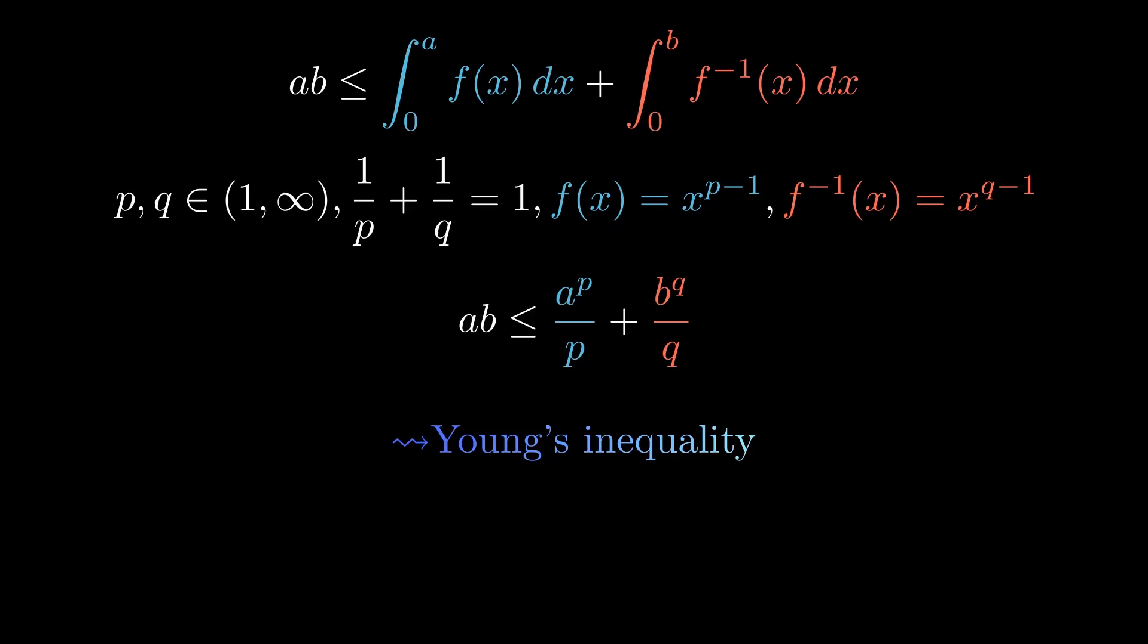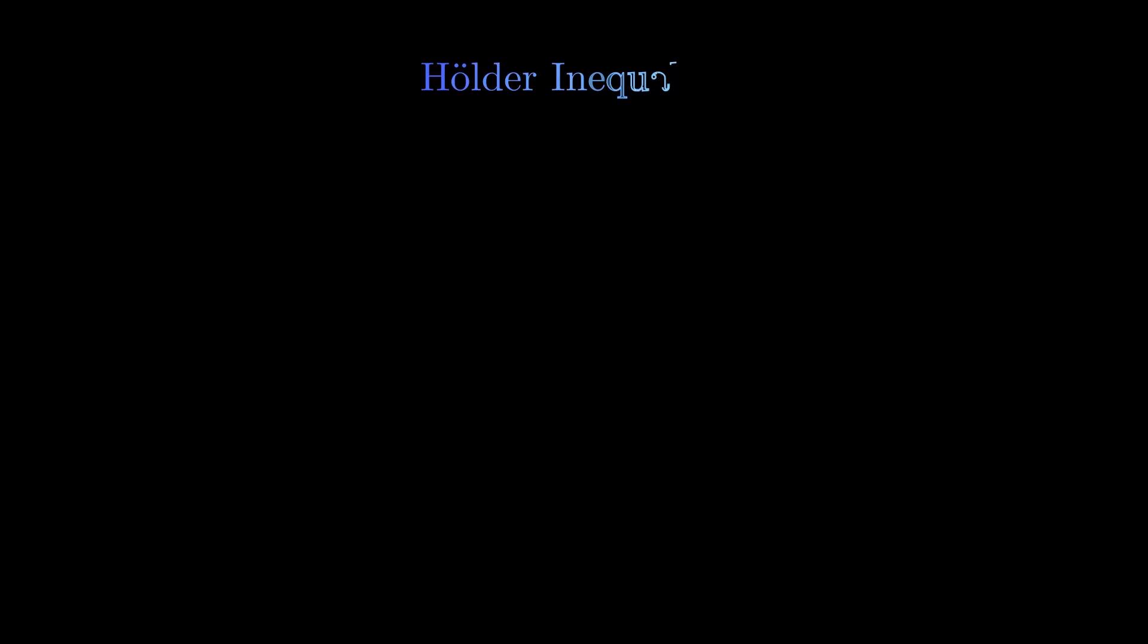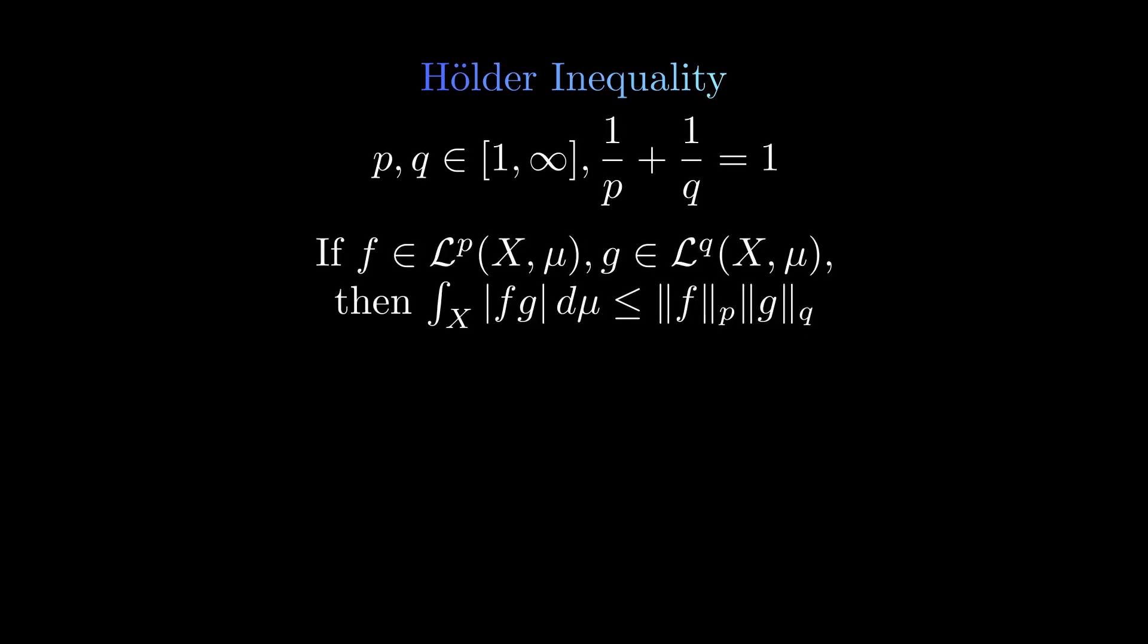With this inequality, we can prove a fundamental inequality in measure theory, the Hölder inequality. We are given two conjugate numbers, where we consider 1 and infinity to be conjugate. Then for any two functions of the corresponding spaces, the integral of the absolute value of the product is lower or equal to the product of the p and q norms. Hölder's inequality is used to prove the triangle inequality for p-norms as we will see. So, how do we prove this?